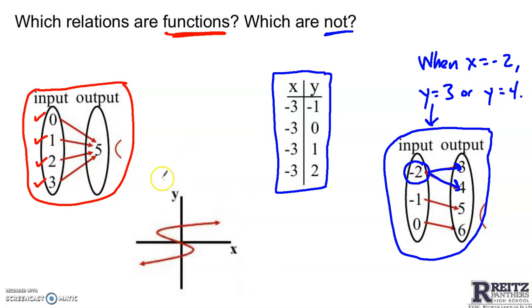Why is this graph not a function? It fails the vertical line test. If you pick one x value, this one for example, negative something, you can actually see that it crosses the graph not once, not twice, but three different places. So this one here fails the vertical line test. It's not a function either.